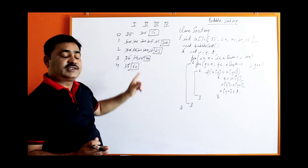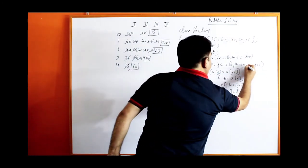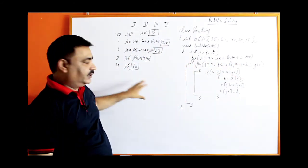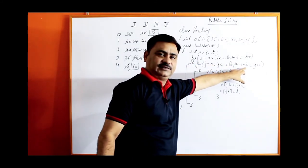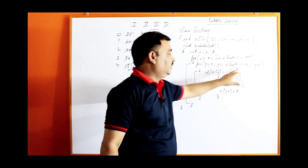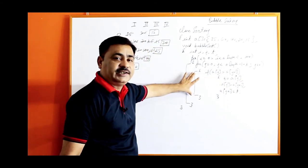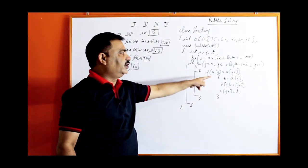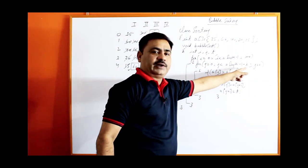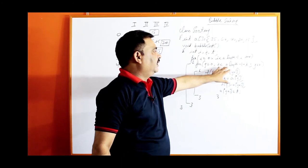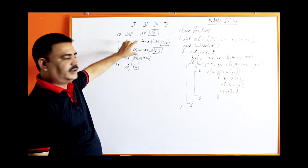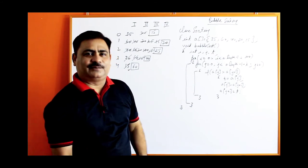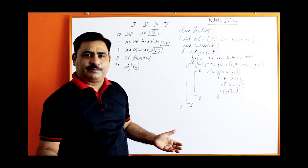So do not compare 40 with 60 in the second round. For this, what you can do: write minus I in the inner loop condition, making it J less than A.length minus 1 minus I. When I is 0, there will be 4 comparisons. When I is 1, it is 4 minus 1 equals 3, so the loop executes 3 times — only 3 comparisons in the second iteration. In the third iteration I becomes 2, so it will be less than 2 — only 2 comparisons. In this way you can apply this optimization. Without it the array will still be sorted, but it increases the complexity of the program with useless comparisons.